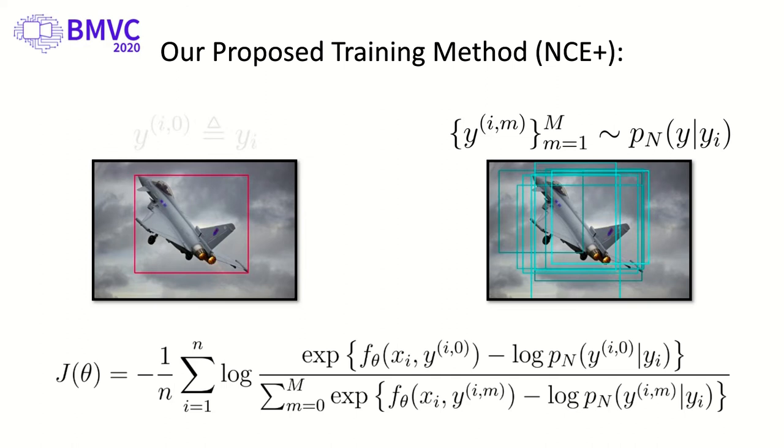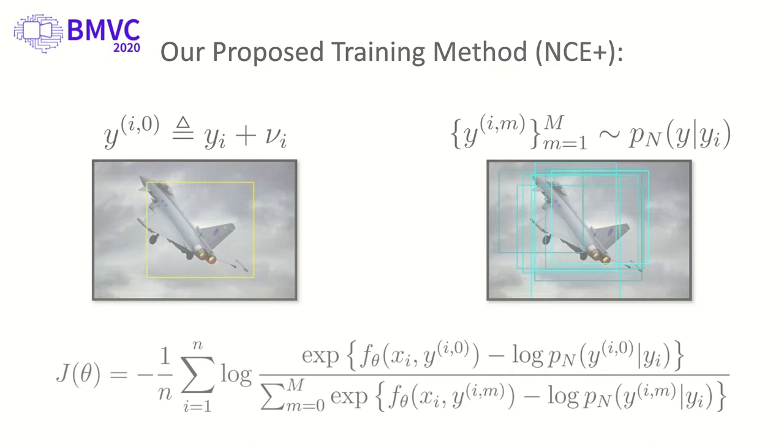In our proposed training method NCE+, an EBM is instead trained by learning to discriminate between a perturbed version of the ground truth and the M noise samples. This simple extension accounts for possible noise in the annotation process of real-world datasets and is shown highly effective in practice.